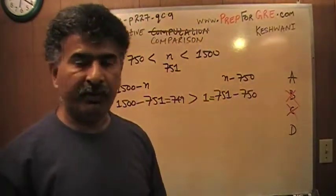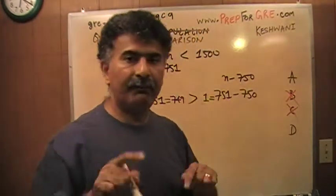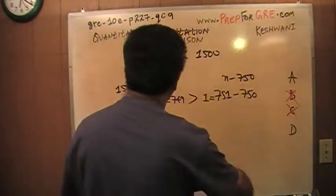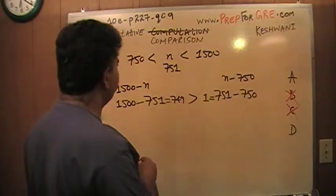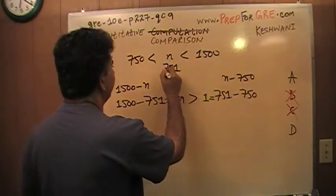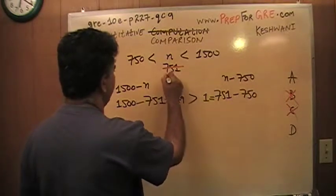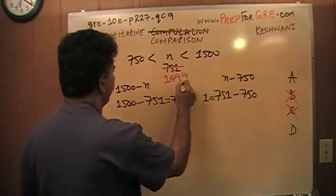So now in order to figure out whether it's A or D, I have to look at the other extreme scenario. Let's pretend that N is, let me do it in a red pen so you can see it. Let's pretend that N this time is very close to 1500. 1499 let's make it.